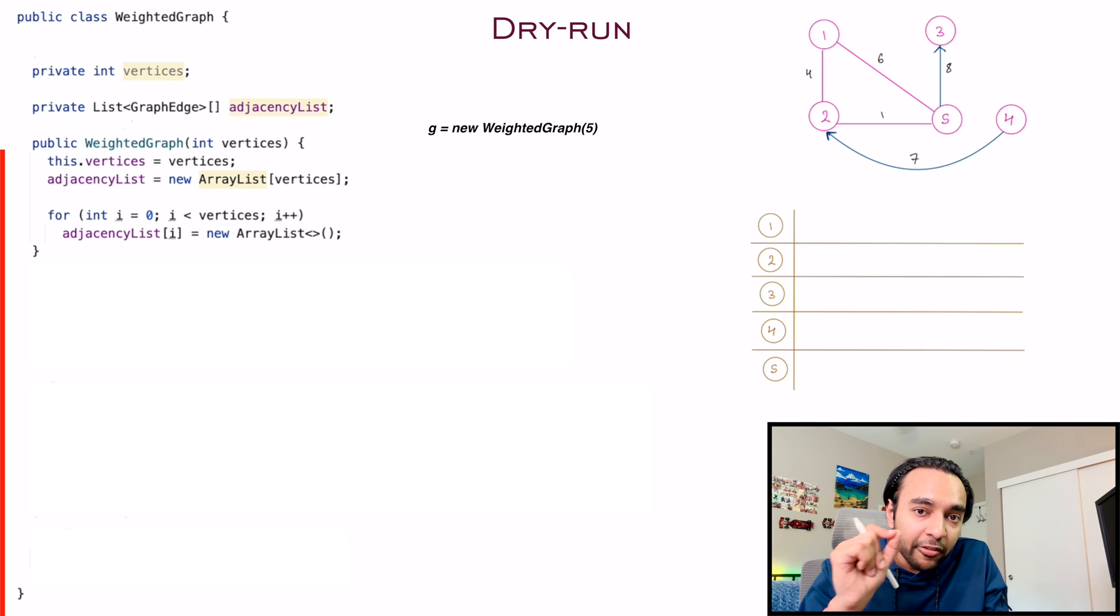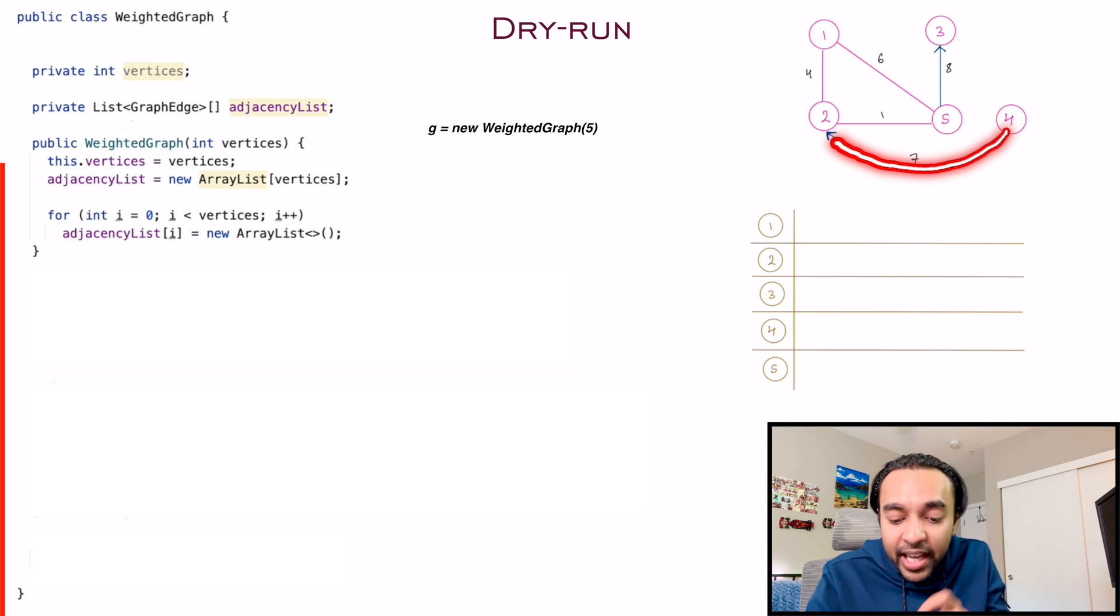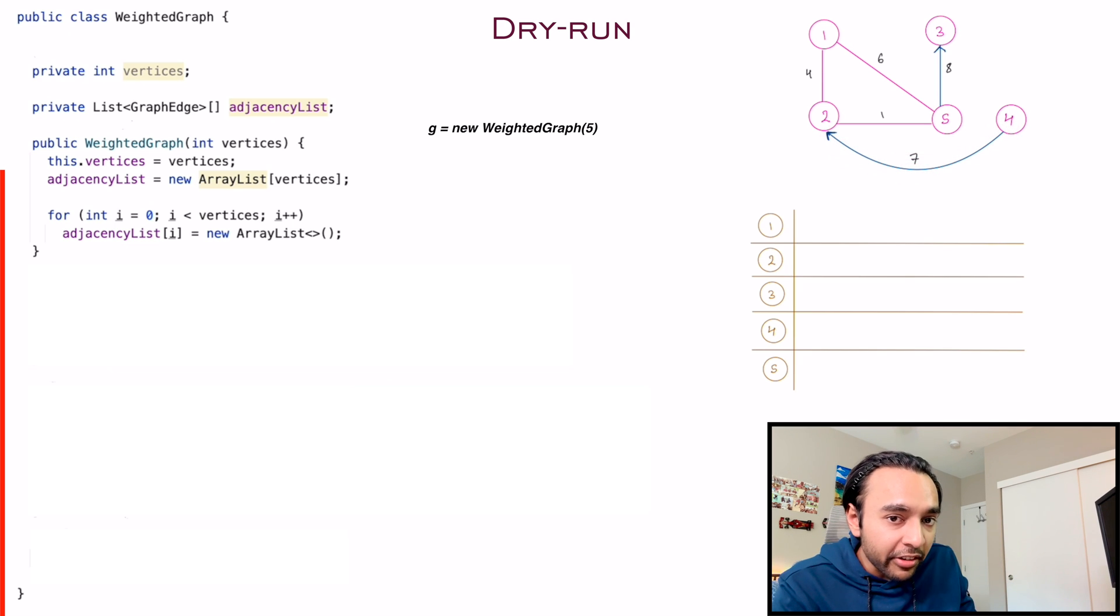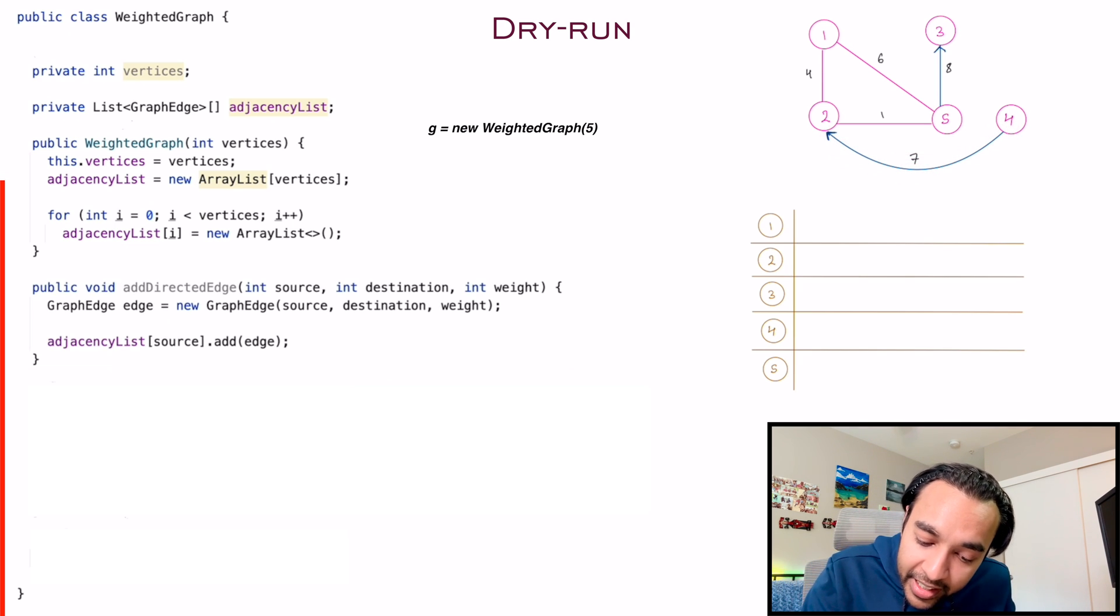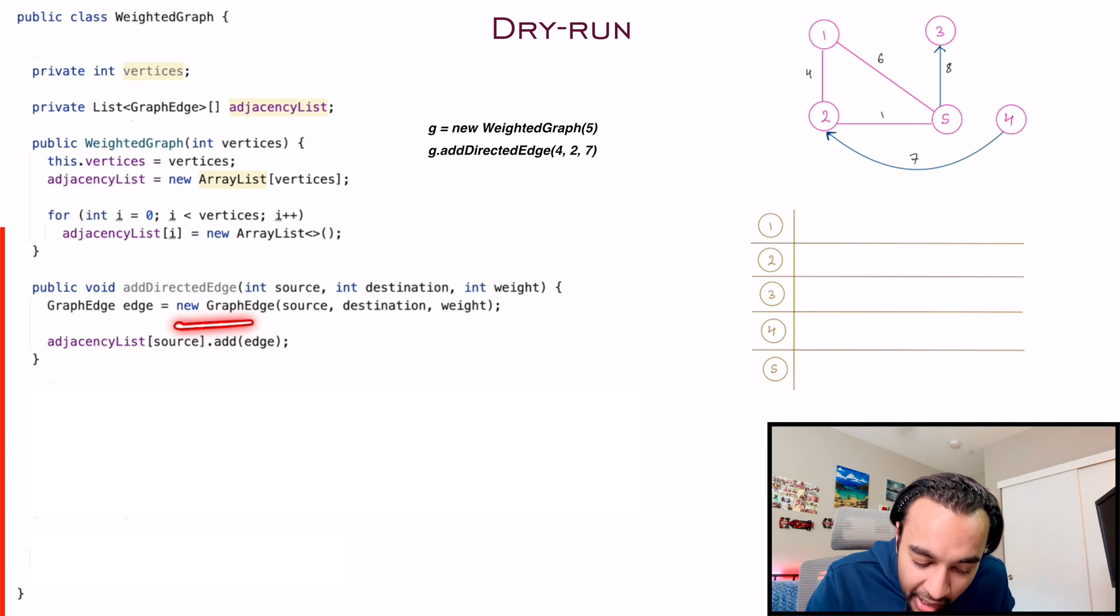Let us now look at one of the edges. Let us say I want to add this edge, the edge between node four and node two. This is a directed edge, and it has a weight of seven. So how do we do this implementation? I have a method that takes in the source, the destination, and then the weight. So the first thing that you do is you create an edge. And this edge has all these three parameters.